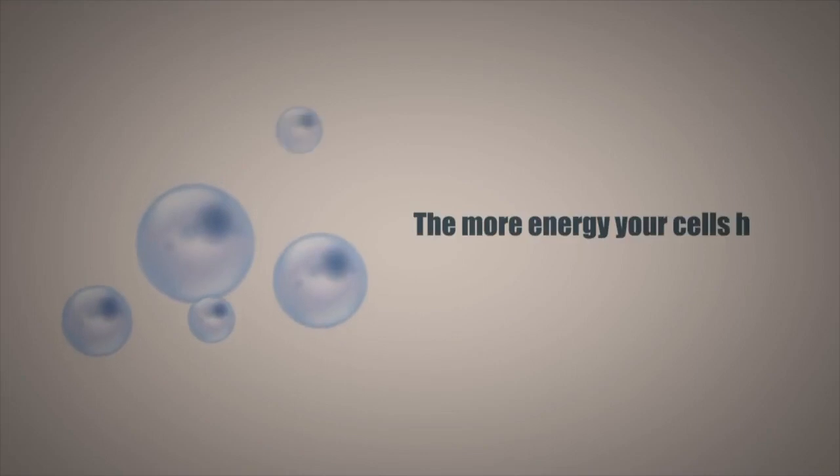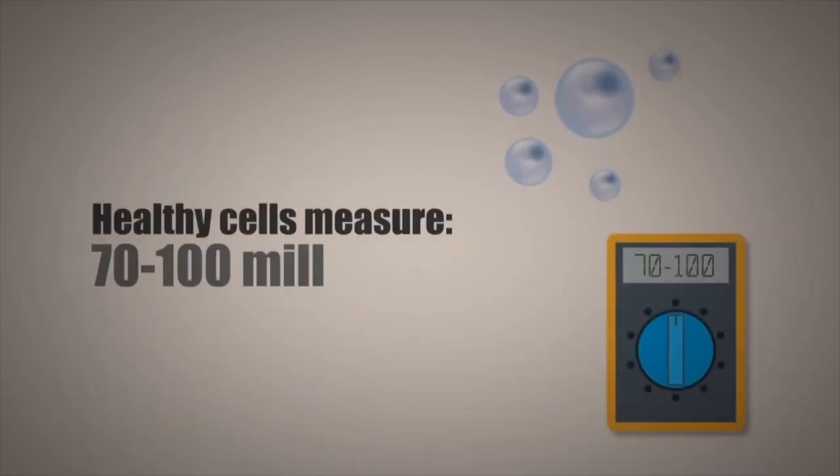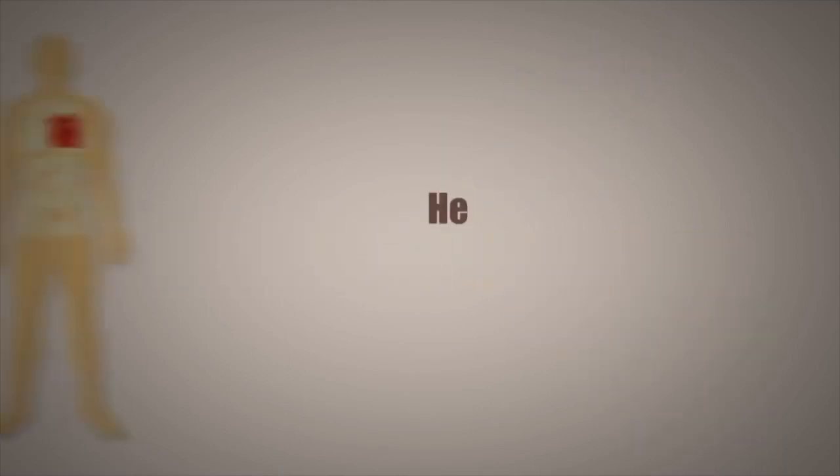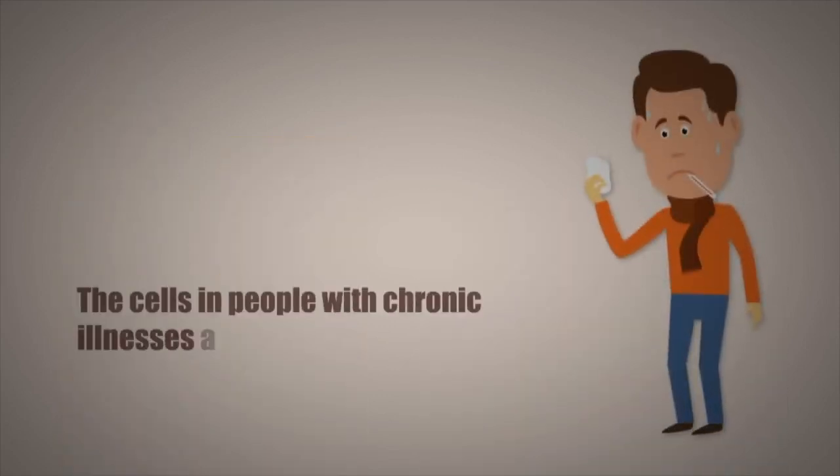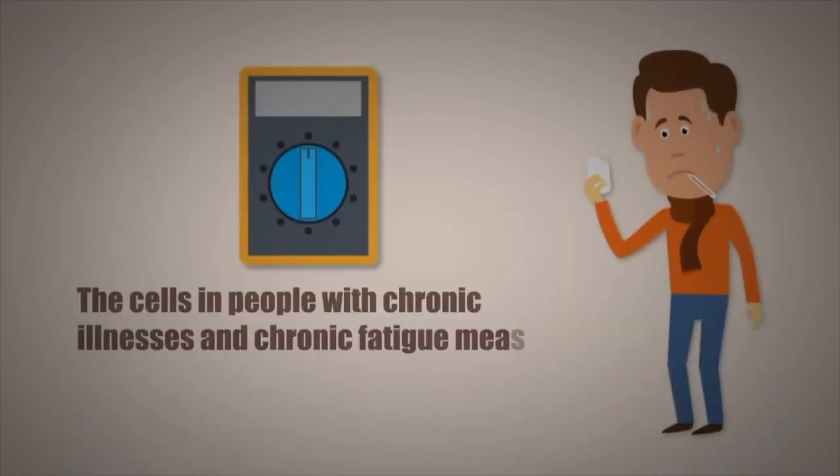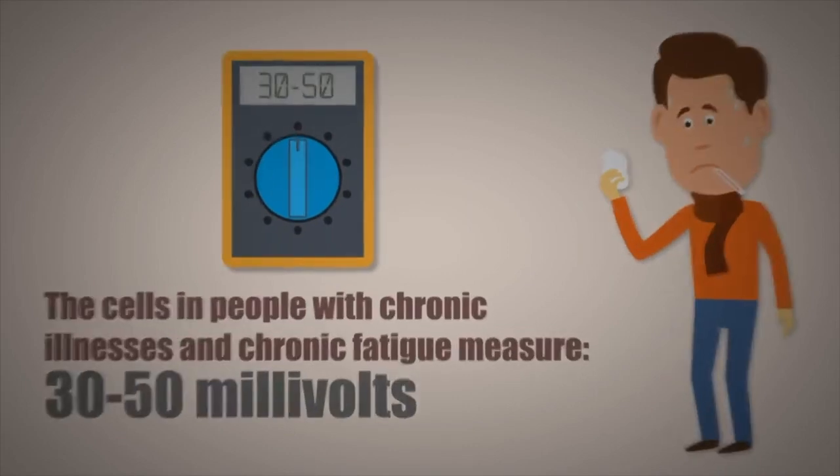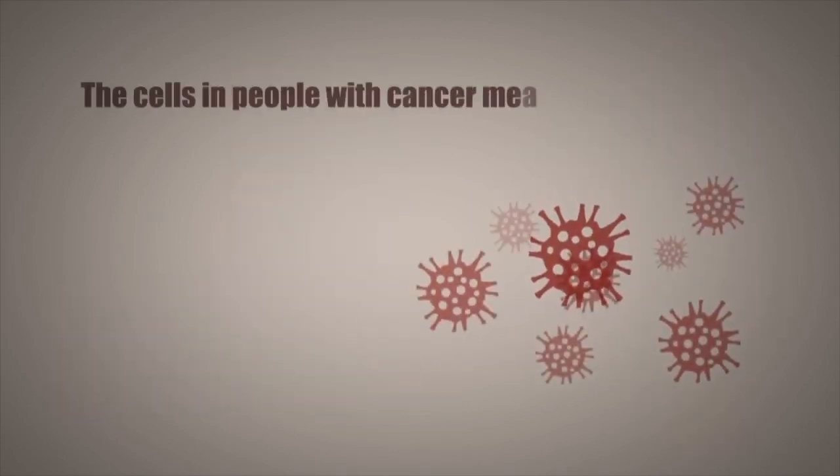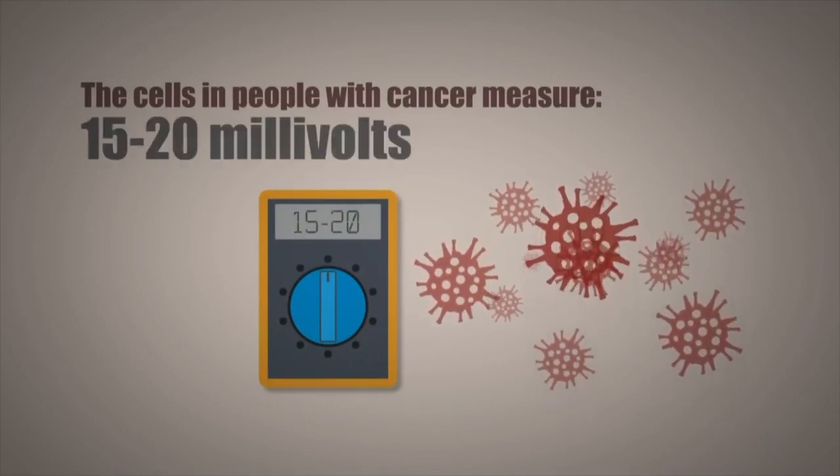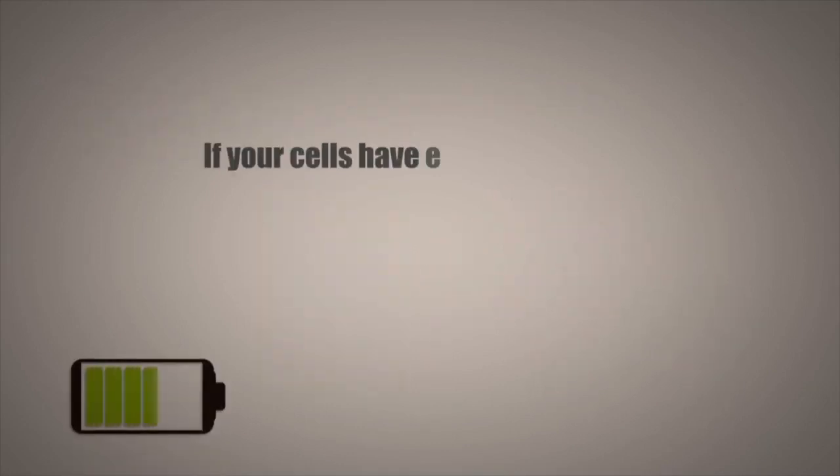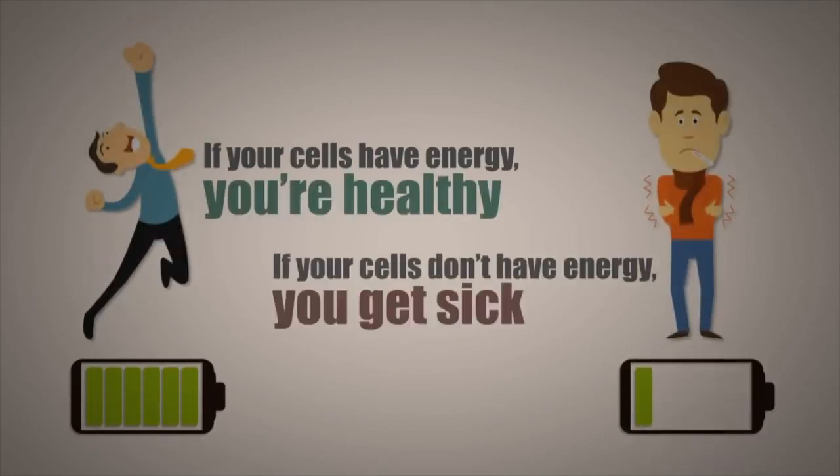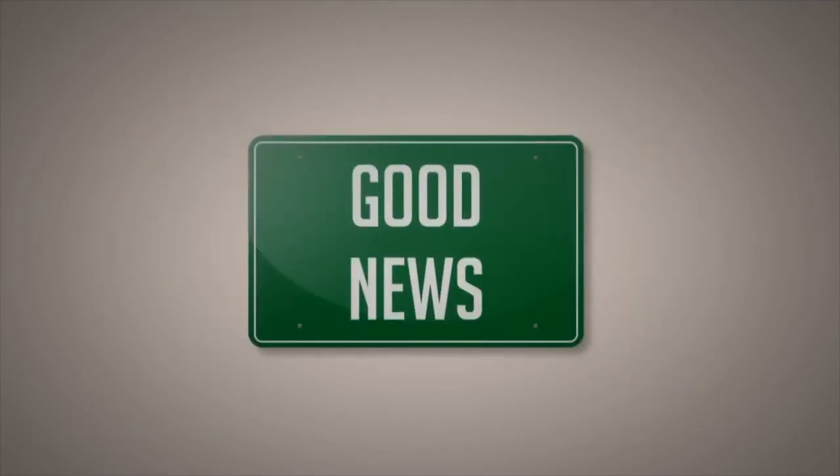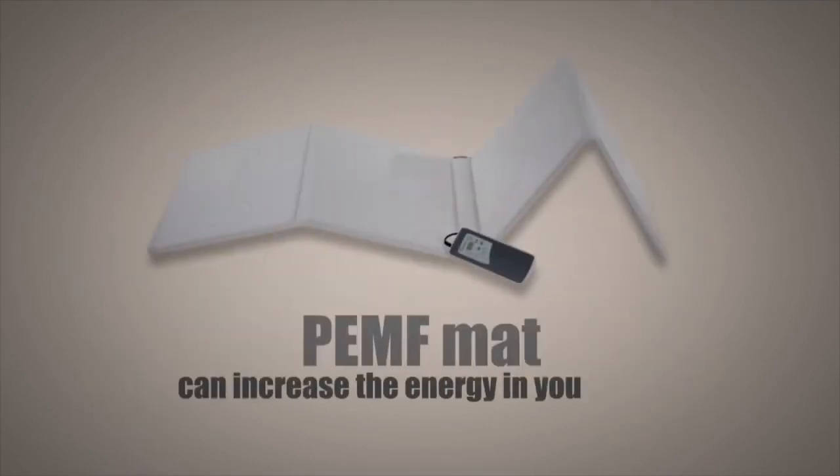The more energy your cells have, the healthier they are. Healthy cells usually measure from 70 to 100 millivolts. Heart cells usually measure from 90 to 100 millivolts. The cells in people with chronic illnesses and chronic fatigue usually measure from 30 to 50 millivolts. The cells in people with cancer usually measure from 15 to 20 millivolts. In other words, if your cells have energy, then you're healthy. And if your cells don't have energy, then you get sick. The good news is that a PEMF mat can increase the energy in your cells.